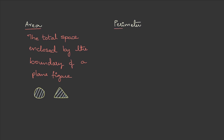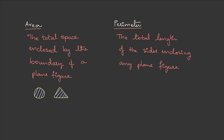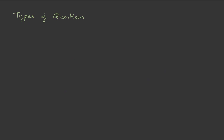Now coming to the perimeter — it is the total length of the sides enclosing any plane figure. Like if you have a rectangle or maybe a rhombus, perimeter is the outer length. If we calculate the sum of all the sides, it gives the perimeter. The shaded part represents the perimeter. Now let's look into the types of questions asked from this topic.